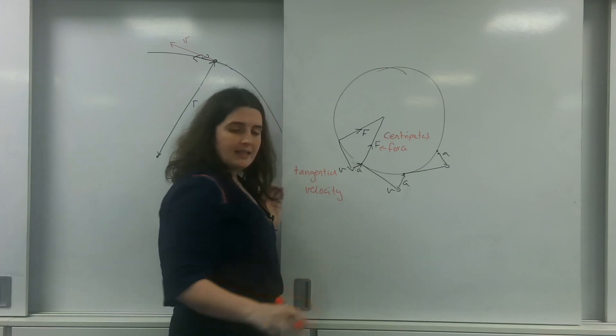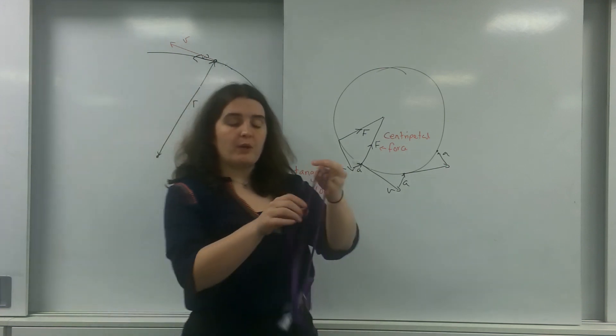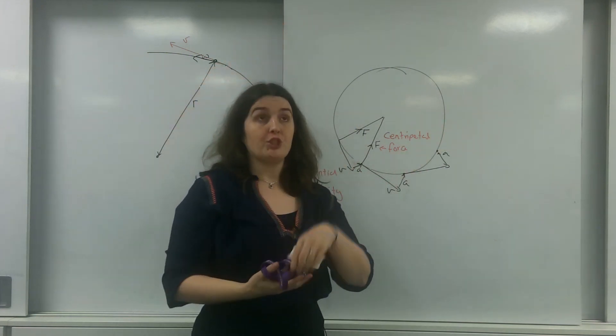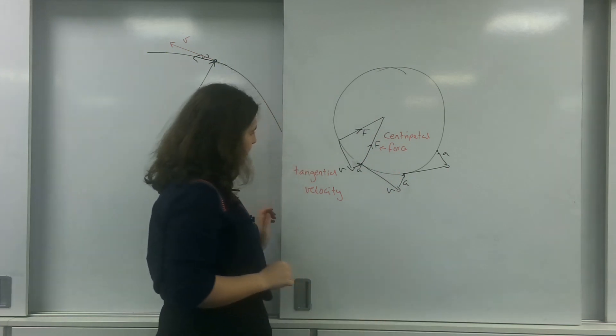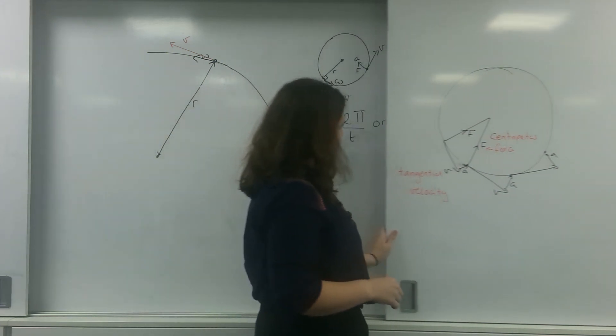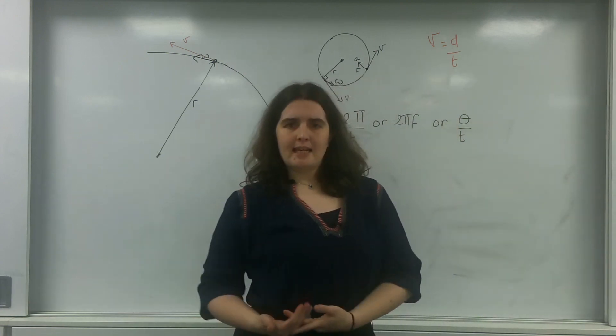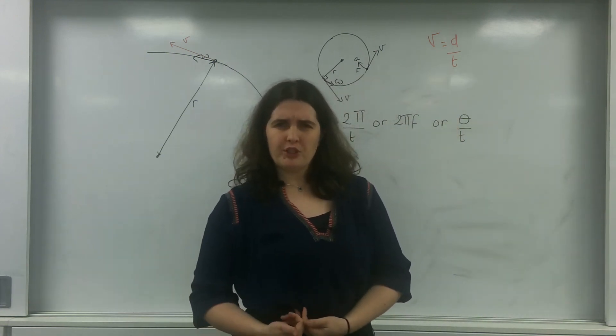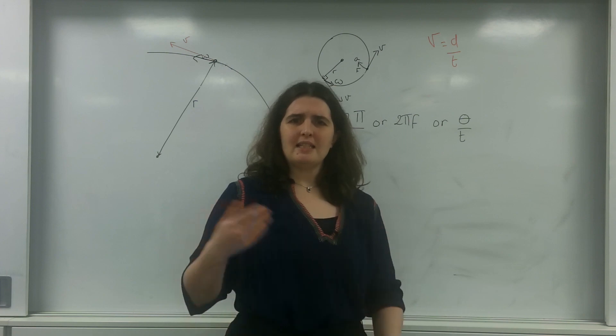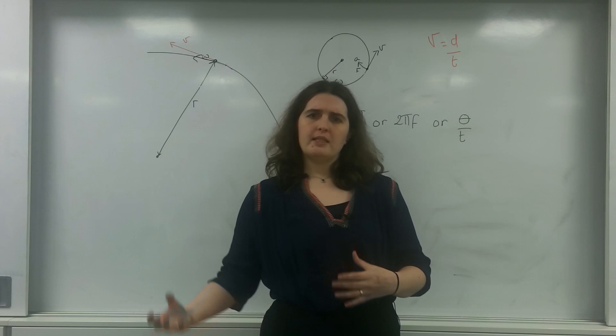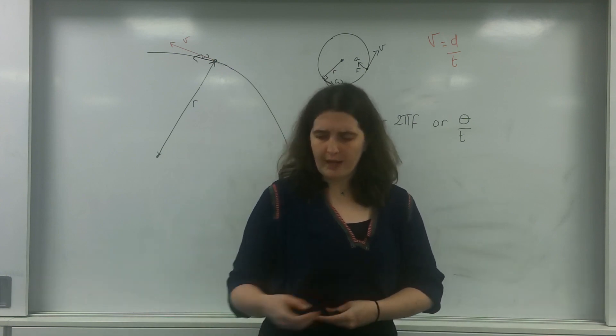This velocity is called a tangential velocity. And if a rope or something was to break at that point, that is the velocity it would shoot out at. So, that's really useful to understand about what this terminology is. But we need to start relating things to each other if we're going to understand how we can calculate forces and speeds.